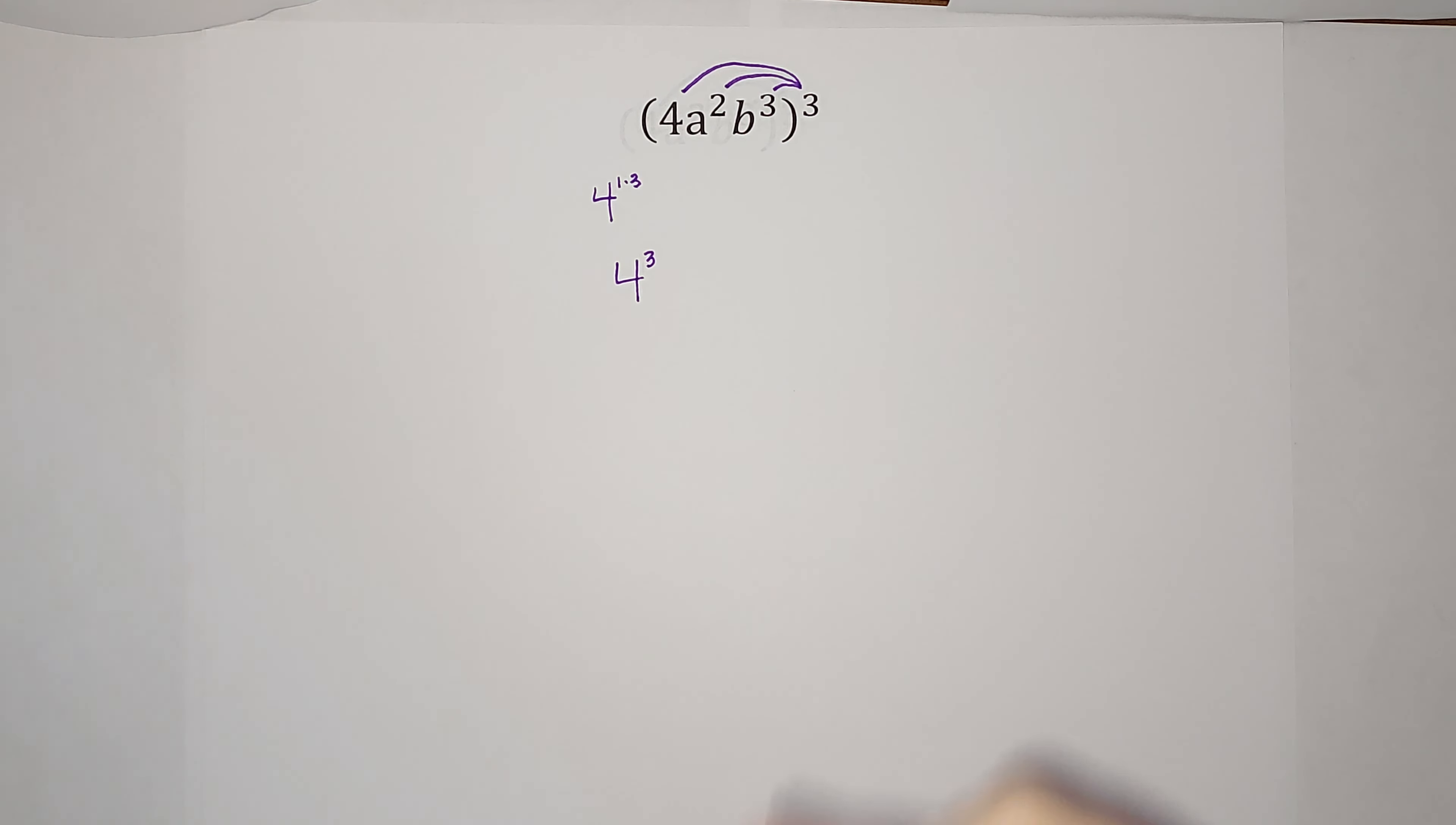And last one, I got b cubed, and we are cubing that. So I multiply those: b to the three times three, which gives me b to the ninth.